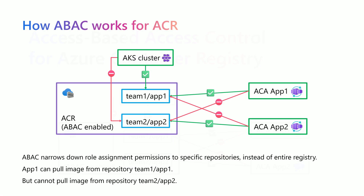With ABAC, this will change. Attribute-Based Access Control will narrow down the role assignment permissions to specific repositories instead of the entire registry. This means that multiple applications can share the same ACR Azure Container Registry, but each application or each namespace in an AKS cluster can have its own repository or even its own set of repositories.